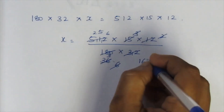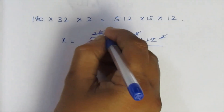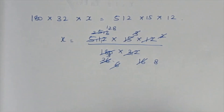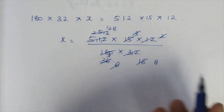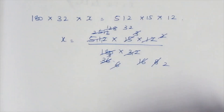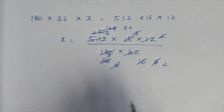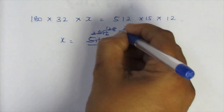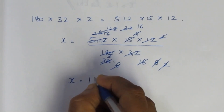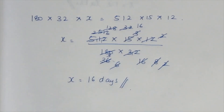2 eights are 16, 2 ones are 2, 2 twos are 4, remainder 1. After cancellation, x is equal to 16 days. So the number of days is 16. x = 16 days is the answer. Thank you.